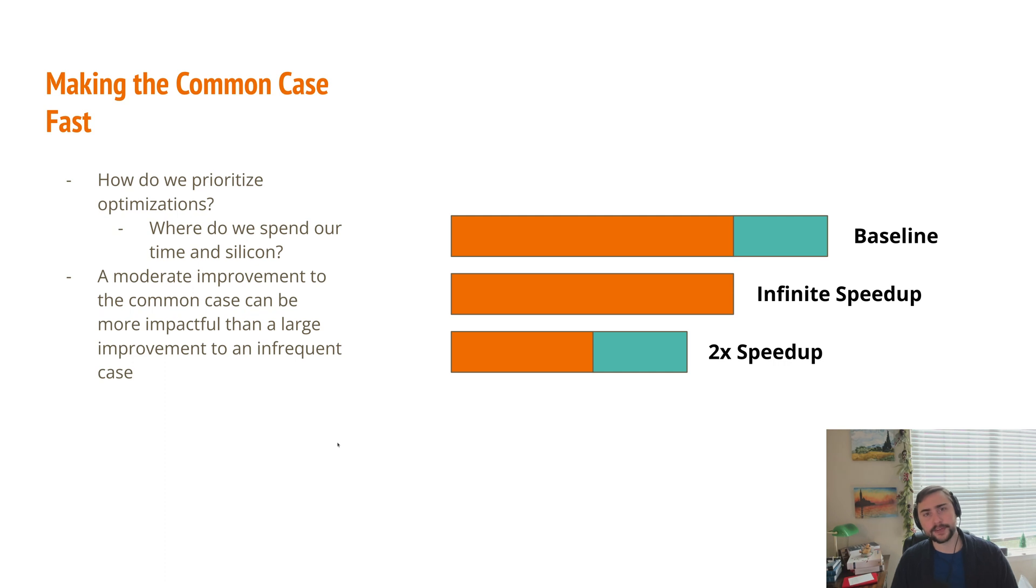Now, another idea that we have in computer architecture is this one of making the common case fast. So this really boils down to how do we prioritize our optimizations and where do we spend our time and our silicon, both of which are finite resources. It's often the case that a moderate improvement on the common case can be more impactful than a large improvement to an infrequent case. So if we consider each of these bars to be the total execution time of a program, with the top one being our baseline...